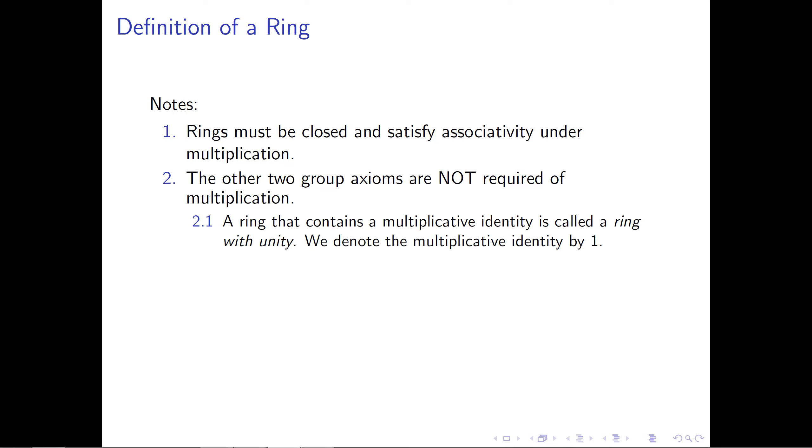If it happens to be the case that our set R contains a multiplicative identity, it doesn't have to, but if it does, then we're going to say that the set R is a ring with unity. That multiplicative identity is called the unity of the ring. And in the case that we have a multiplicative identity, we're going to denote this by 1. And we don't require that inverses exist. However, in the case that we have an element with a multiplicative inverse inside our ring, we're going to call that element a unit. And the collection of units in a particular ring is denoted U(R).